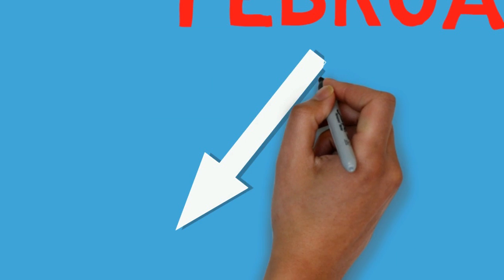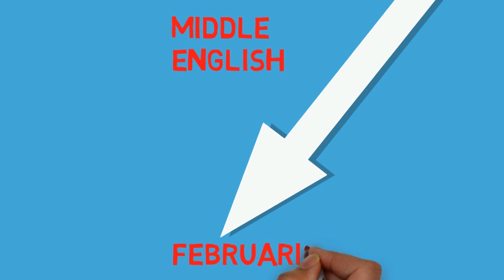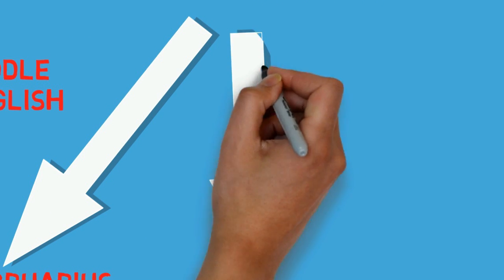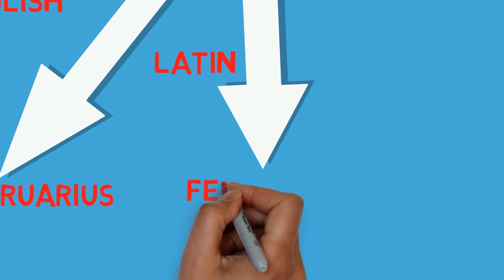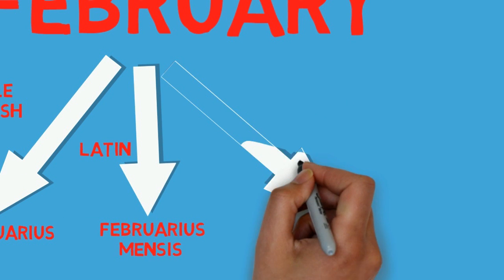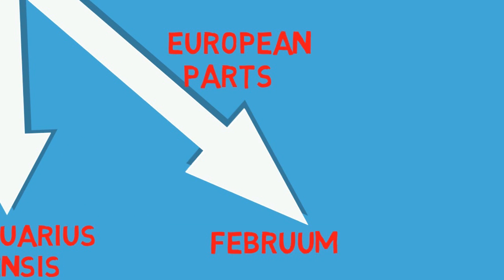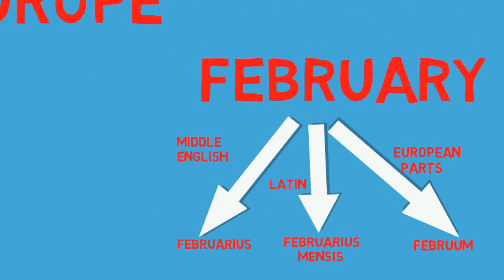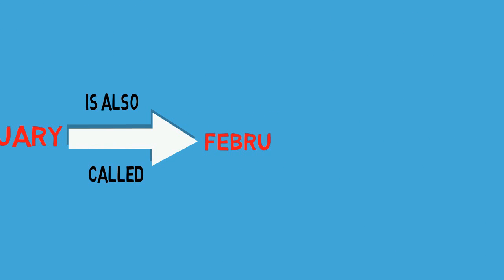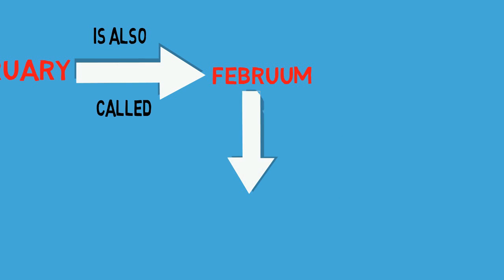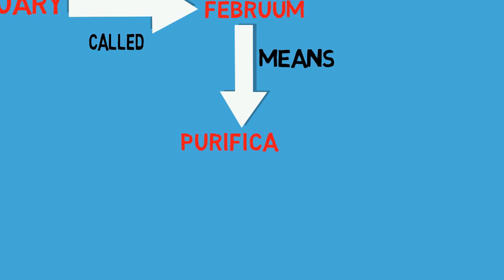Due to the vast number of cultures and languages in Europe, February has many different names. In Middle English it was called Februa, in Latin it was called Februus Mensis, and in some parts of Europe it was called Februum. According to studies, Februum means purification, because the month was a time for purification.